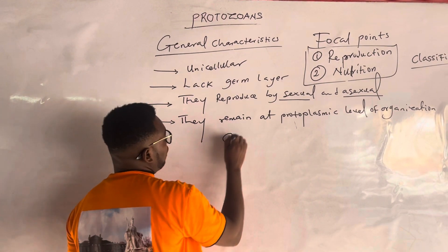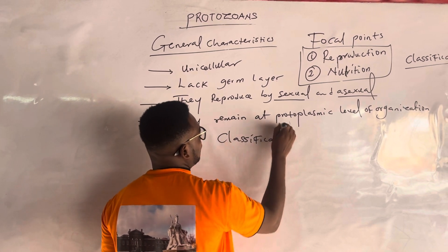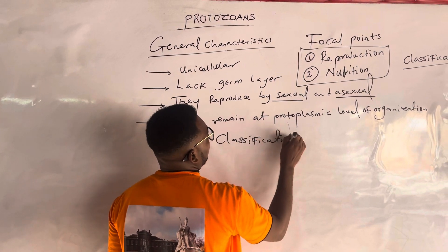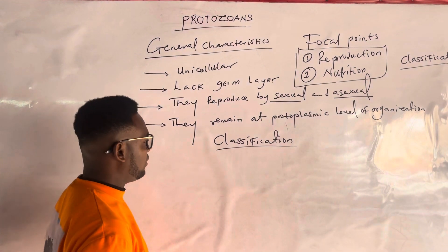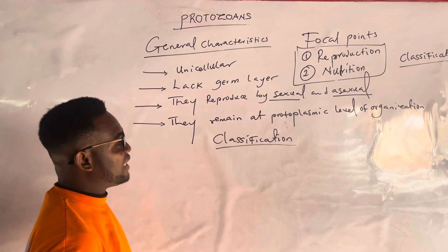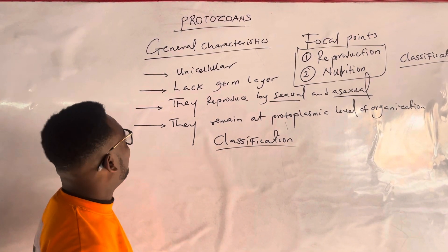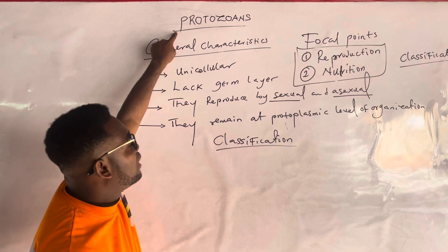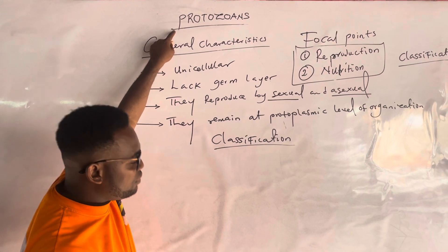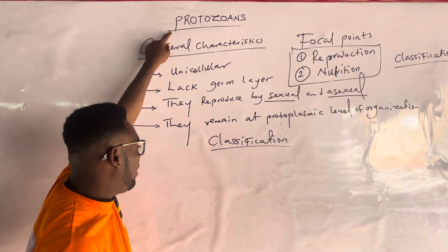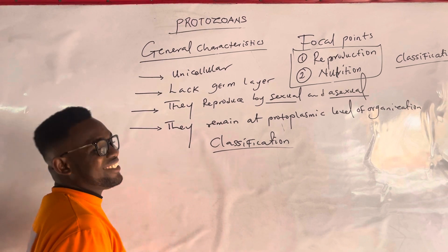Now for classification — very quickly. How are protozoans classified? For classification, there is something called a phylum. This is a kingdom; after kingdom there is a sub-kingdom; after sub-kingdom there is phylum; after phylum there is class.